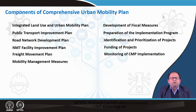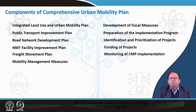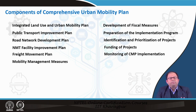Some of the mandatory components to deliver in a comprehensive mobility plan include: integrated land use and urban mobility plan, public transport improvement plan, road network development plan, non-motorized facility improvement plan, freight movement plan, mobility management measures, fiscal measures, implementation programs, prioritization of projects, funding sources, and monitoring of implementation. These different plans are prepared based on the outcomes of the models and scenarios developed.